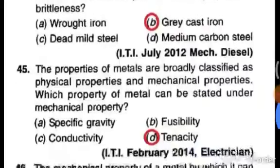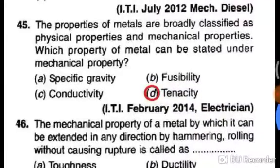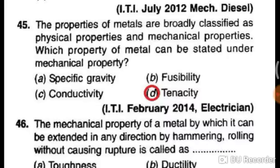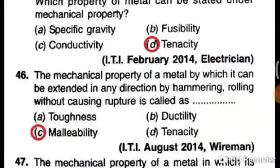Which ferrous metal possesses the property of brittleness? Grey cast iron. The properties of metals are broadly classified as physical properties and mechanical properties. Which property of a metal can be stated under mechanical property? Tenacity.